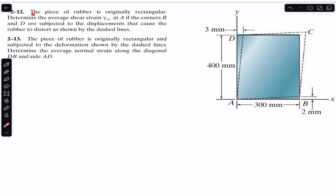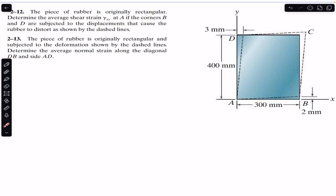Hello students, welcome back to Engineers Academy. Do hit the subscribe button if you are new to my channel. Now we are going to solve two problems. The first says a piece of rubber is originally rectangular — determine the average shear strain gamma_xy at point A if corners B and D are subjected to displacements that cause the rubber to distort as shown by the dash line. The second problem asks to determine the average normal strain along diagonal DB and side AD.